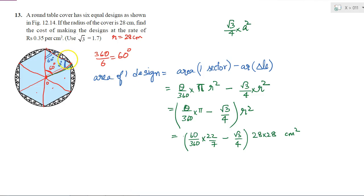So what will be the total area of the 6 designs? That will be 6 times of this. So total design area will be 6 into, here 60 by 360 is 1 by 6. So 1 by 6 into 22 by 7 minus √3 by 4 into 28 into 28 centimeter².